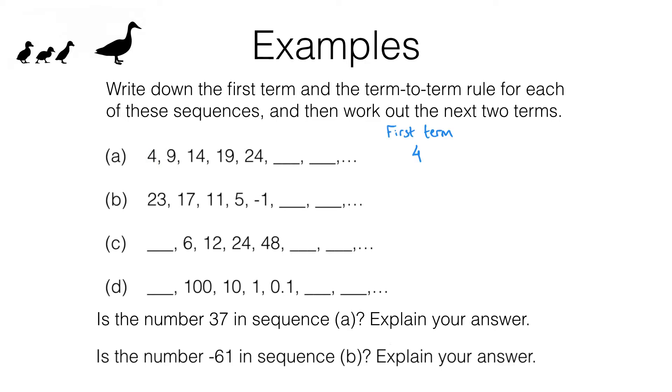What we also need to find is the term-to-term rule. What are we doing to turn a 4 into a 9, a 9 into a 14, a 14 into a 19 and so on? Well hopefully you can see that this sequence is going up in equal steps. It's going up in steps of 5. That means the term-to-term rule is add 5.